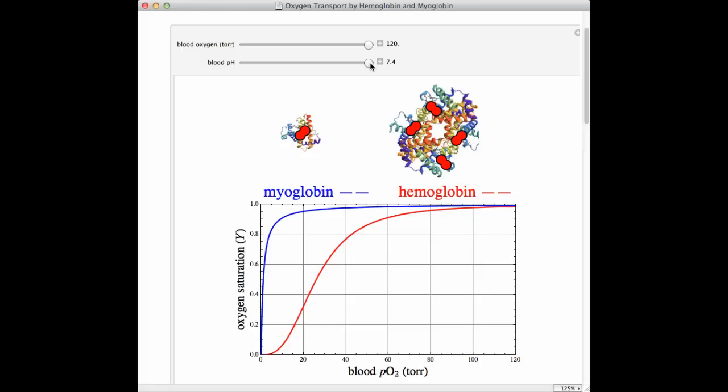The second slider allows me to adjust blood pH. So 7.4 is a normal blood pH. What I'm going to do is adjust the slider to the left and it's going to make the blood pH more and more acidic. And you want to watch the curves to see what happens. You kind of got to pay attention here because now you're starting to see that hemoglobin curve in red flex a little bit. I'm going to call it flexing. But really, it's getting deflected to the right. Whereas the myoglobin curve does not change.